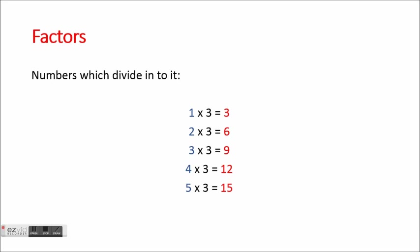Factors work the other way around. You already have your list of multiples, and the factors are the numbers that divide into them. So 1, 2, 3, 4, 5 — and 3 is a factor too. Every multiple can be split into two factors multiplied together. So 3 and 5 are both factors of 15.